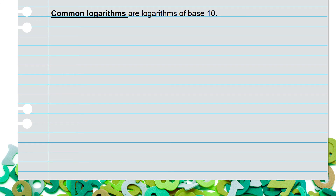Next, we're going to talk about common logarithms. Common logarithms are logarithms of base 10, which means if you see log of x, that means automatically log base 10 of x. If you do not see a base, it's understood to be an imaginary 10. Recall the definition of logs: you can only take the log of a positive value, so log of x requires x to be greater than 0. Common logs can be used on the calculator by using the button labeled log.